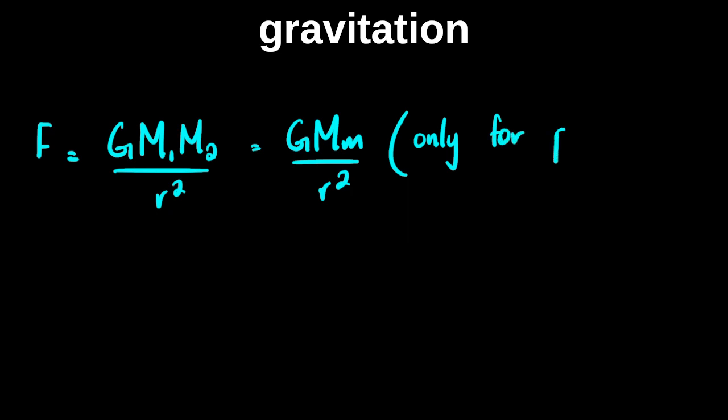This formula is only for point masses. The idea of point masses is that you assume all the mass is concentrated at one point in the body, and for uniform objects that point is their center. Sometimes the examiner asks when you can use Newton's law of gravitation, or when the real force differs from the calculated force, so you need to know what it means for something to be a point mass.